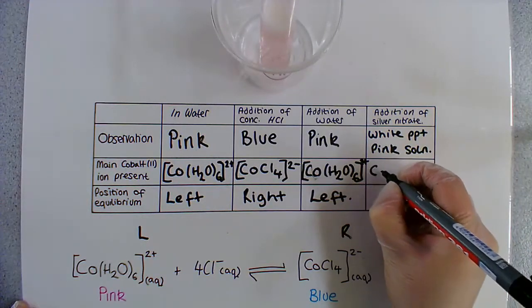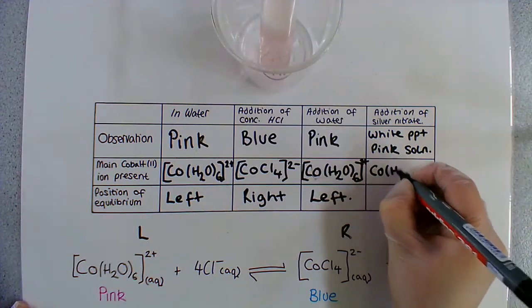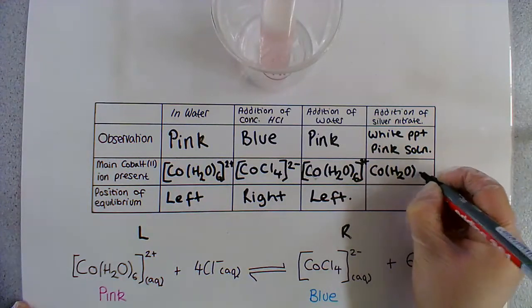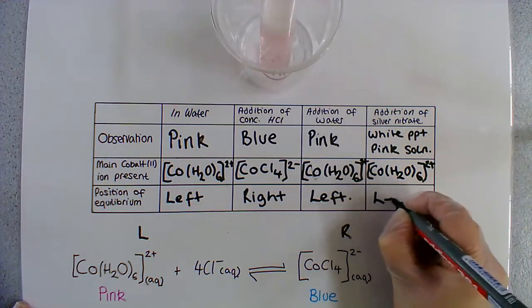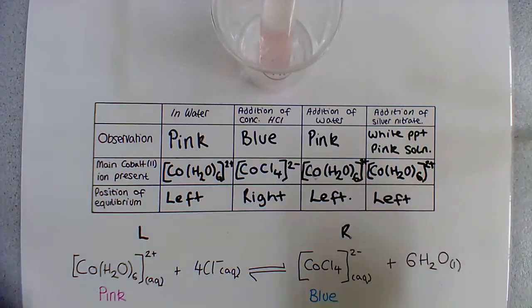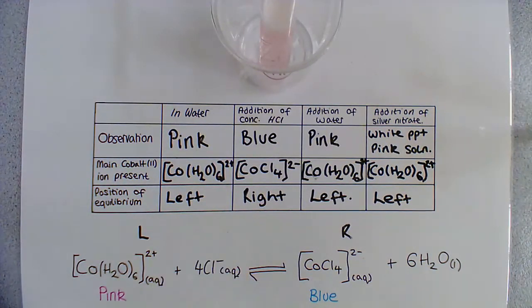So again, our main ion here is our cobalt-hexa-aqua complex. And the equilibrium remains on the left-hand side. But it will have been shifted slightly more to the left-hand side to replace those chloride ions that we took away.